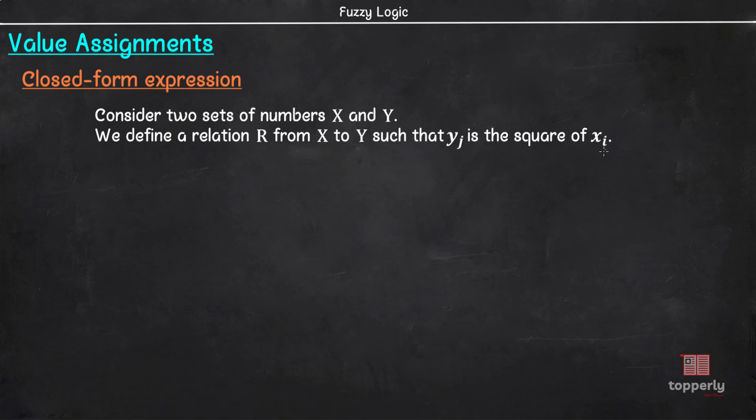Then we can create a membership function for this relation as Rij equals 1 minus absolute value of xi square minus yj divided by xi square. As an example, consider the relation between number 3 in set X and number 7 in set Y. Here, Rij of (3,7) equals 1 minus absolute value of 3 square minus 7, the whole by 3 square, which equals 1 minus 2 by 9 or 0.777.